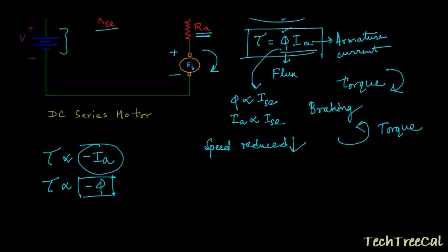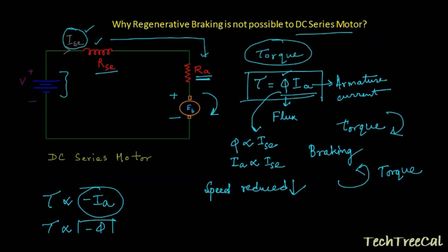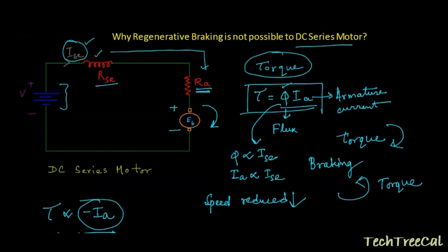In DC motor regenerative braking, the back EMF ED becomes greater than the supply voltage V. That is why the current from the motor flows back to the source.